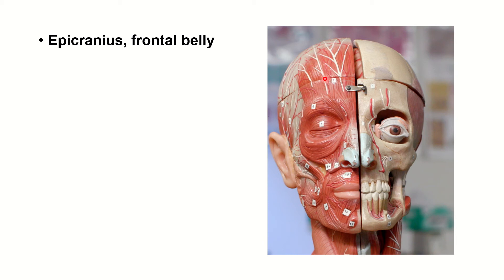This is the frontal belly, or frontal muscle. This is the orbicularis oculi muscle. I'm not talking about the functions of the muscles here because I have a different video for functions. This is the corrugator supercilii — I did not label it there, but just in case you want to know.